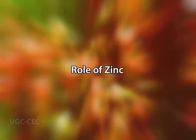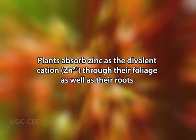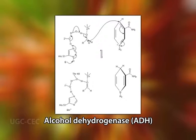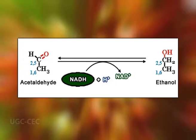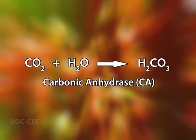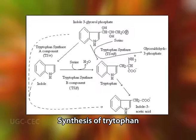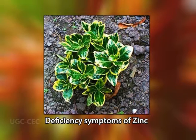Plants absorb zinc as the divalent cation through their foliage as well as their roots. Zinc is an activator of a large number of enzymes, including alcohol dehydrogenase, which catalyzes the reduction of acetaldehyde to ethanol, and carbonic anhydrase, which catalyzes the hydration of carbon dioxide to bicarbonate. Along with copper, zinc is a component of superoxide dismutase. It is also required for chlorophyll biosynthesis and synthesis of tryptophan, a precursor of the plant growth hormone auxin. Zinc deficiency is characterized by a reduction in internodal growth, resulting in a rosette habit of growth.